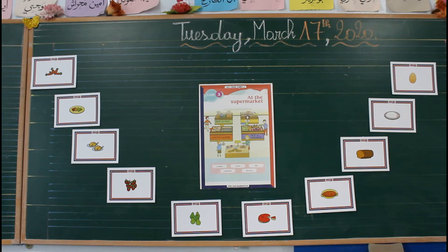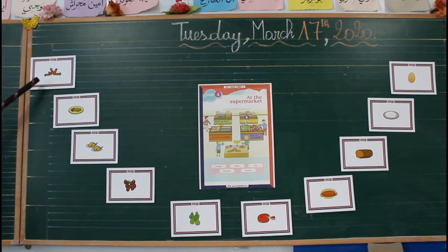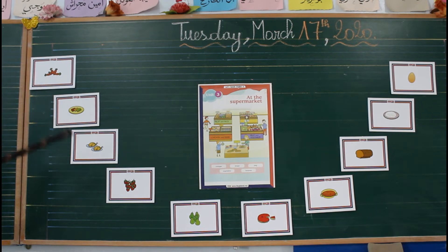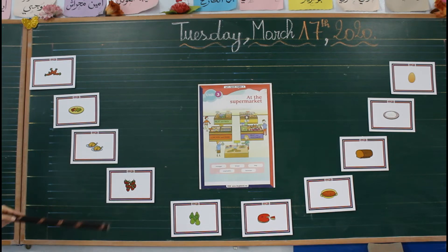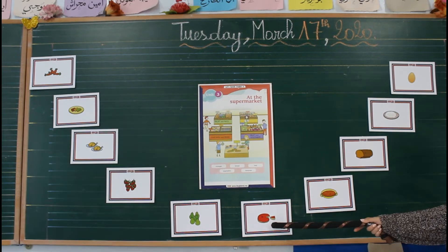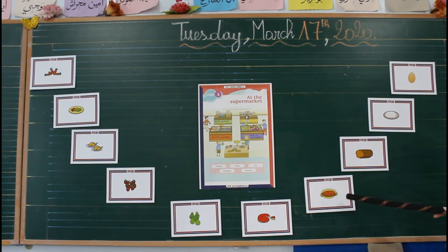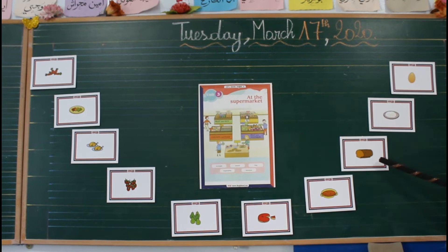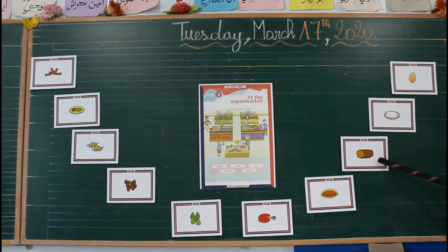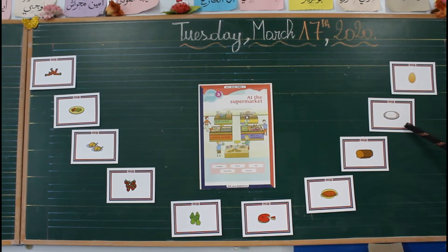Look at the pictures you have on the board and tell me what can you see? Carrots. Biscuits. Chicken. Strawberries. Pears. Cake. Soup. Bread. Rice. Egg.